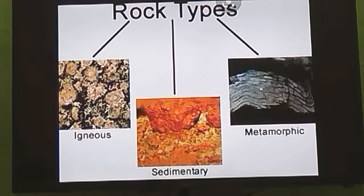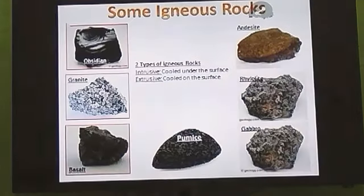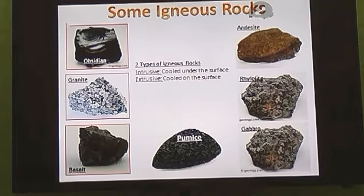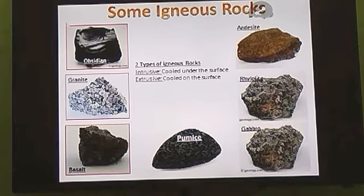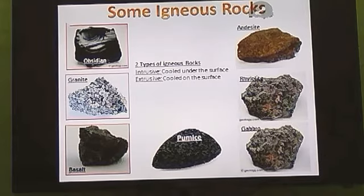First of all, we will discuss igneous rocks. There are many types of igneous rocks, but today we will discuss only four: Basalt, Granite, Obsidian, and Pumice. These are the four igneous rocks in our syllabus. Do you know there are two types of igneous rocks? The first is intrusive — igneous rocks which form under the surface — and extrusive — rocks which form on or above the surface.